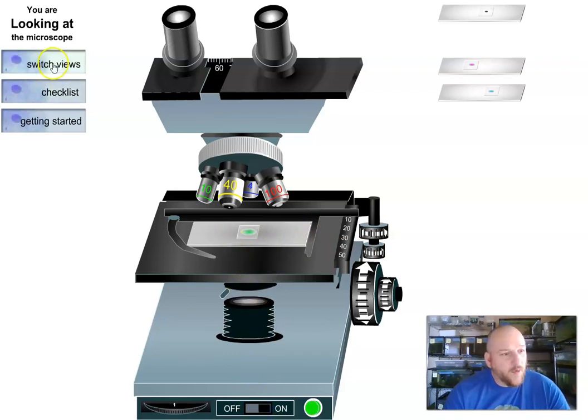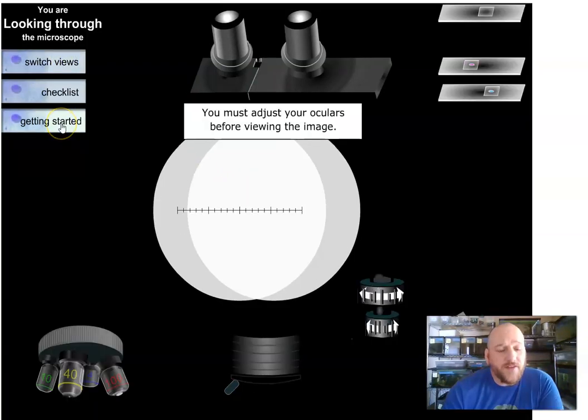And there's this switch view thing here where we can see what our view looks like in a different circumstance. It's not terribly clear but right now the four times objective is facing the scope so that's what we're seeing. So we're going to switch views here. Since this is a binocular scope.